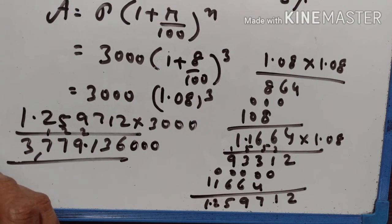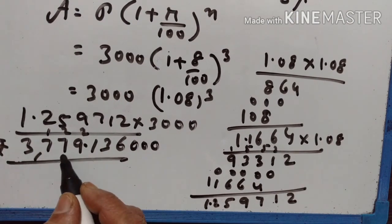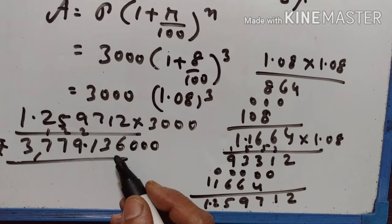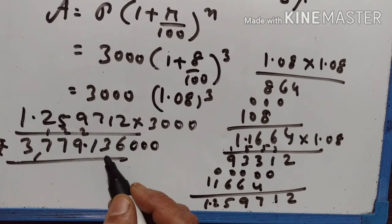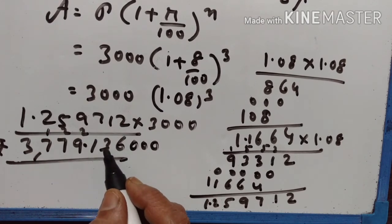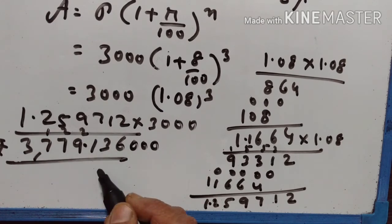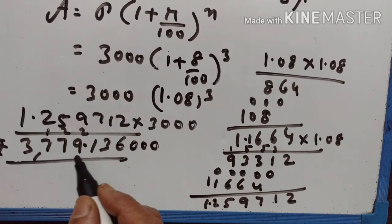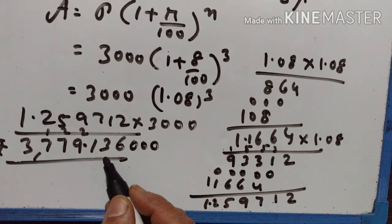So, the amount is equal to rupees 3779. You can approximate it to 2 decimal places: rupees 3779.14.